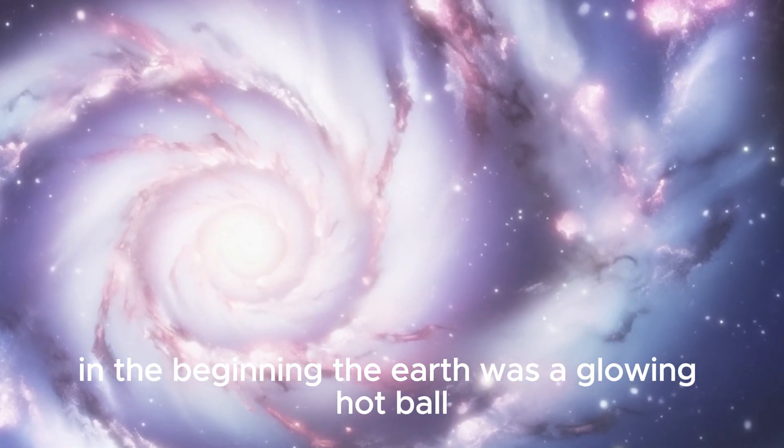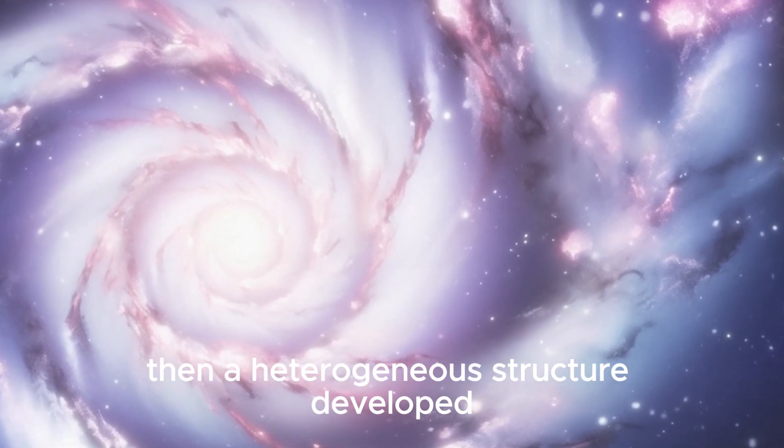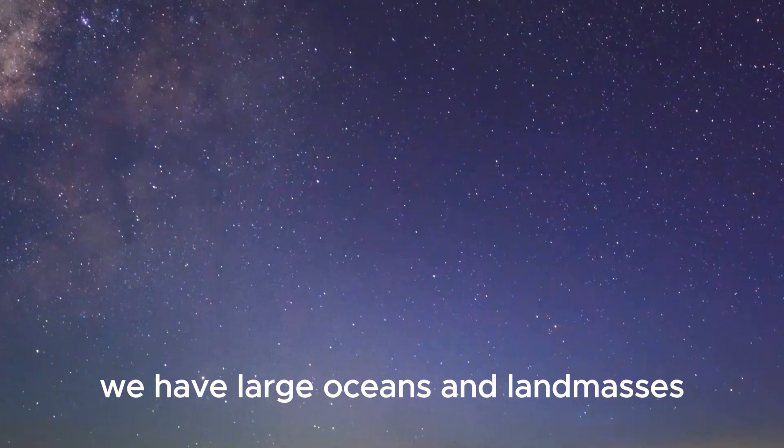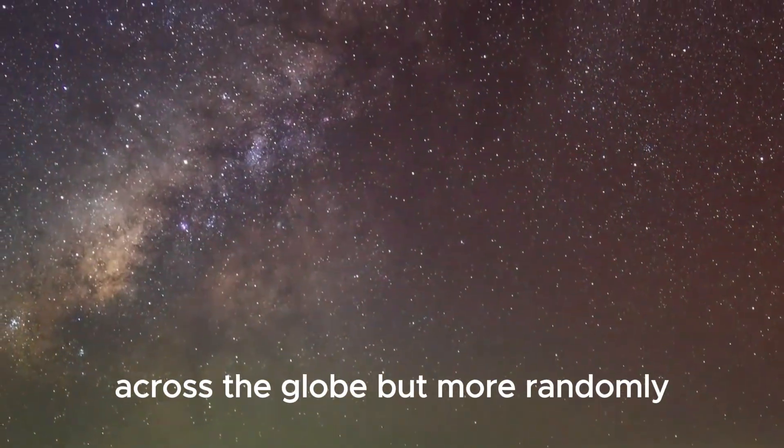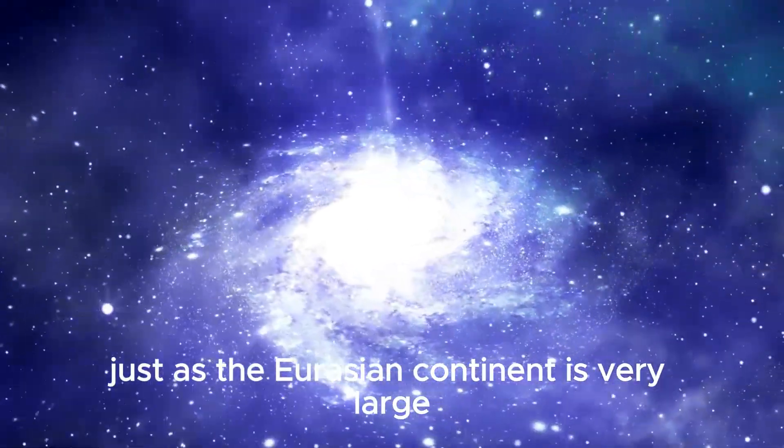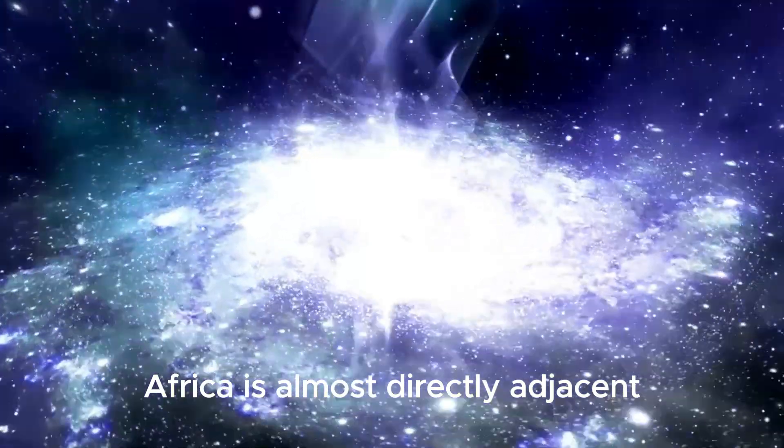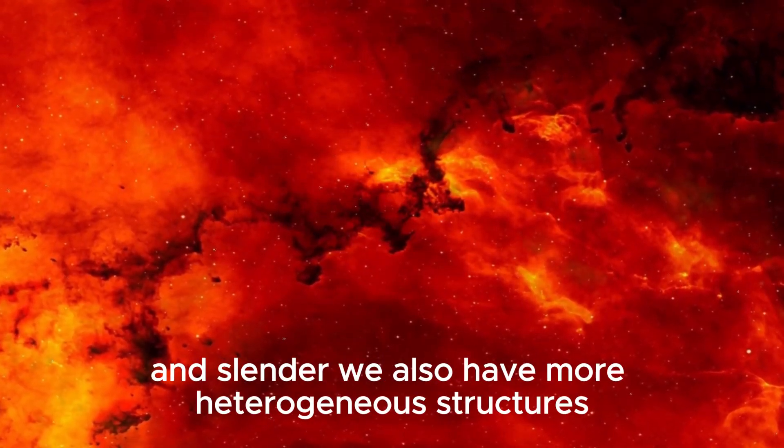Then, a heterogeneous structure developed, at least on the surface. We have large oceans and land masses that are not necessarily evenly distributed across the globe, but more randomly. The Pacific is huge, just as the Eurasian continent is very large. Africa is almost directly adjacent, while the American continents are elongated and slender.